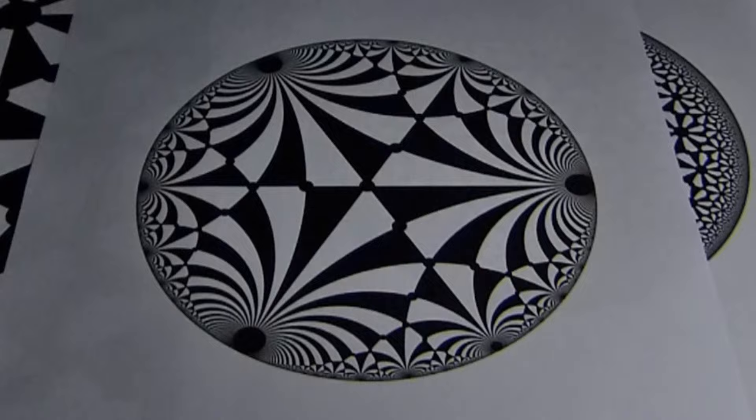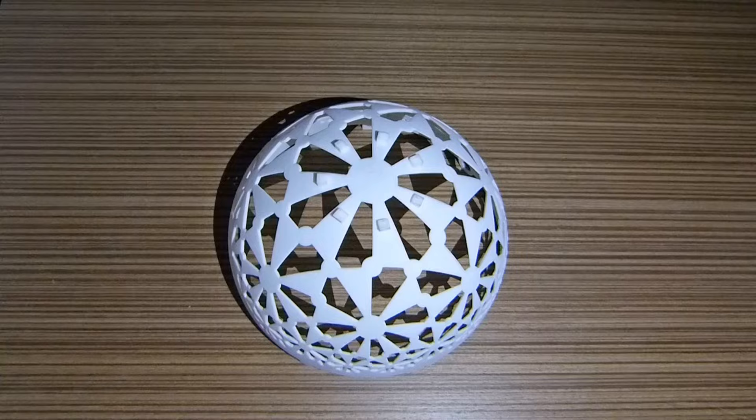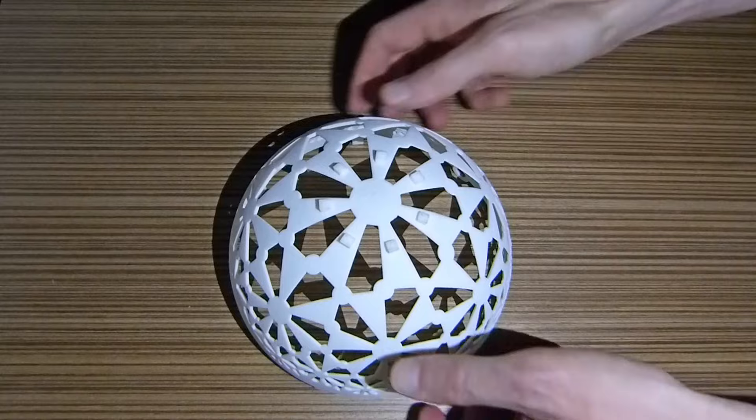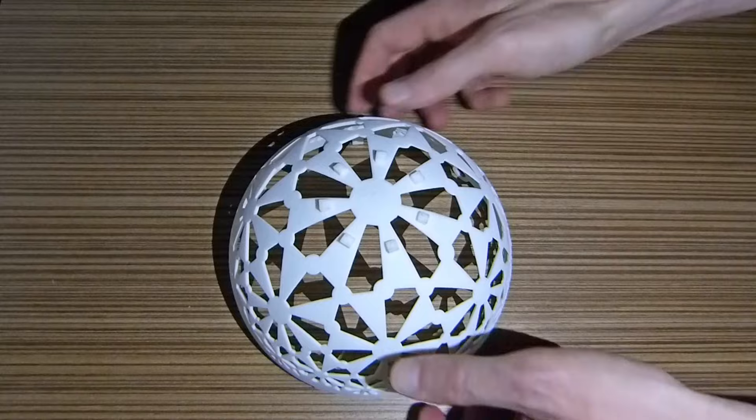There are many other ways to represent the hyperbolic plane inside of Euclidean space. Here is a 3D printed hemisphere model. In this model, geodesics are intersections of the hemisphere with vertical planes, giving circles perpendicular to the boundary. Again, lengths are distorted, but angles are correct. We can get the Poincaré disk model from the hemisphere model using stereographic projection.